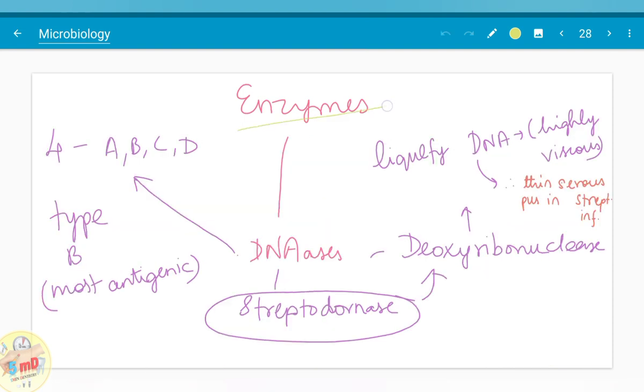The third enzyme is DNAse, deoxyribonuclease, also known as streptodornase. Streptodornase has four antigenically distinct types among which B is most antigenic. It liquefies DNA. Generally the DNA is highly viscous but due to the presence of deoxyribonuclease, thin serous pus is seen in streptococcal infection.